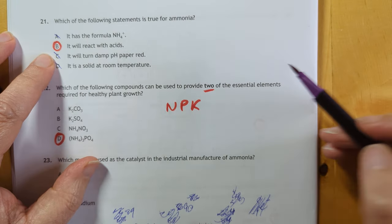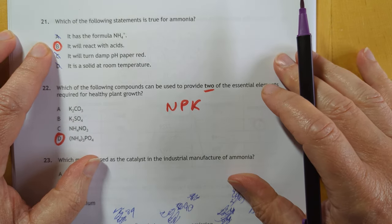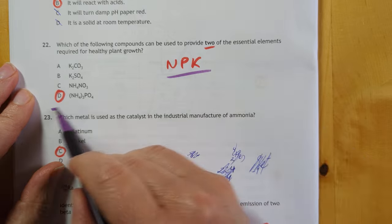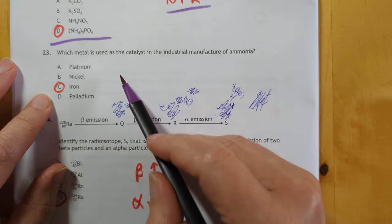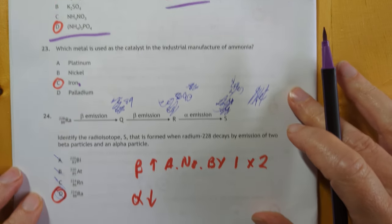Which of the following statements is true for ammonia. It reacts with acids. That's it. That's the only one that's true. 2 over NPKs that will be answer D for 22. 23 just have to know it. It's memory time. It's iron as the catalyst for the manufacture of ammonia.